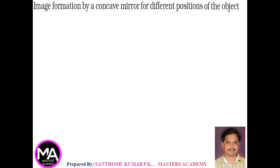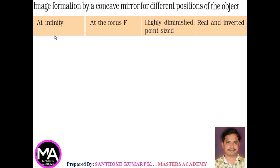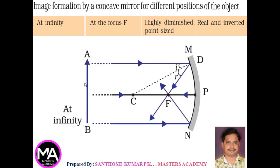Image formation by a concave mirror for different positions of the object. First case: the object is at infinity. When the object is at infinity, consider AB is the object. The rays coming from the object are parallel rays. After reflection from the mirror, they form an image at point F, the focus. The image formed is highly diminished and point-sized, and the nature of the image is real and inverted.